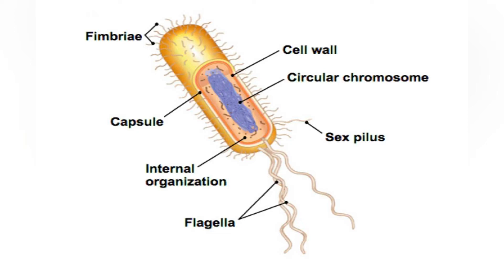Fimbria possess adhesins which attach them to some sort of substratum so that the bacteria can withstand shear forces and obtain nutrients. For example, E. coli uses them to attach to mannose receptors.